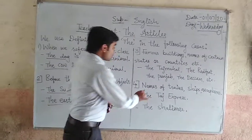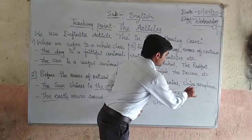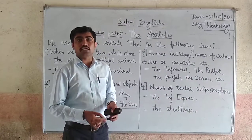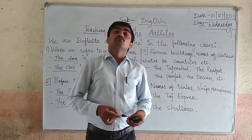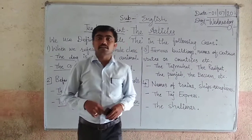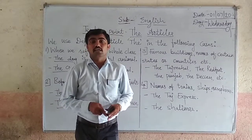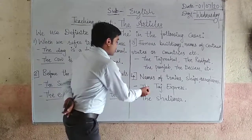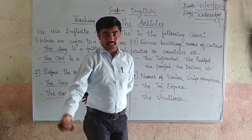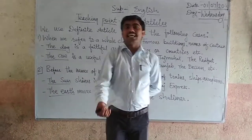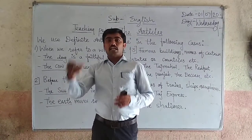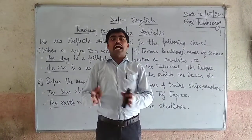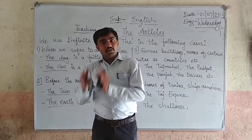The fourth point is: before names of trains, ships, and aeroplanes, we have to use the article The. For example: the Taj Express, the Shalimar Express — these are the names of trains, so we use the article The before them.